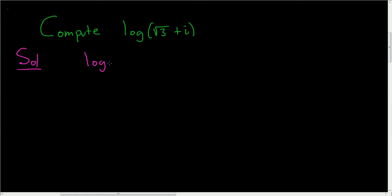So in this problem, the log function is the multivalued function. It's the complex logarithm. And this is equal to the natural log of the absolute value of the modulus plus i times the argument of z.